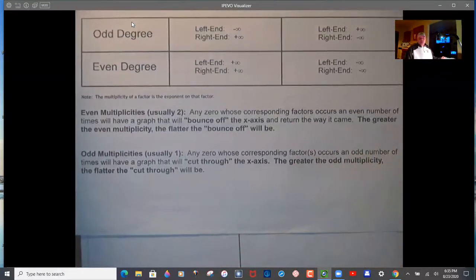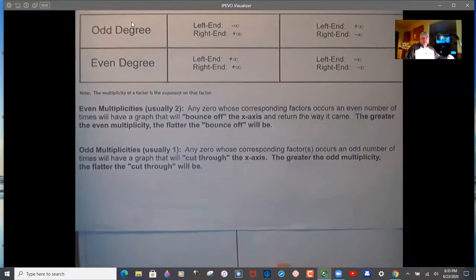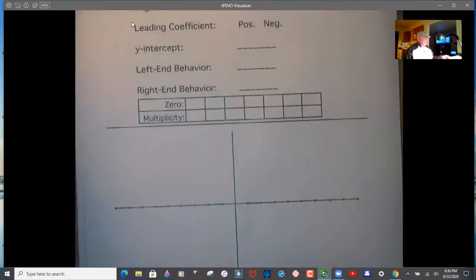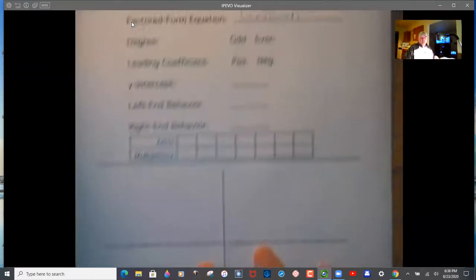Even multiplicities make the graph bounce back in the direction it's coming. Odd multiplicities cut through. The greater the multiplicity, even or odd, the flatter the graph becomes as it bounces off or cuts through. I will try my best to highlight this as we go.